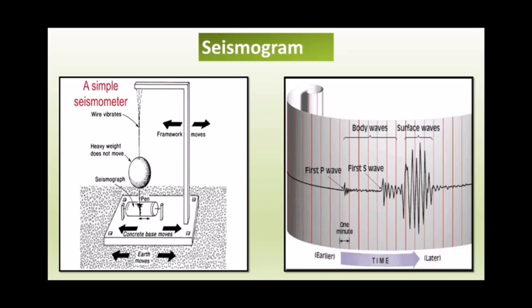A seismograph or seismometer is an instrument used to record the motion of the ground during an earthquake. A seismogram is the recording of the ground shaking at the specific location of the instrument. The instrument is simply a vibrating rod on a pendulum which starts vibrating when there is motion on the ground. A pen or marker is attached to the pendulum, and it records the seismic waves on a moving paper. The pendulum tip records the earthquake on a graph sheet.